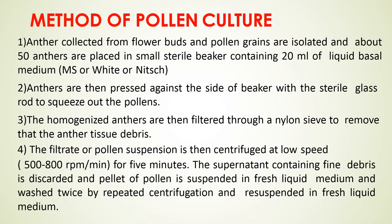Methods of pollen culture: anthers are collected from flower buds and pollen grains are isolated. About 50 anthers are placed in a small sterile beaker containing 20 ml of liquid basal medium, which could be MS, White, or Nisch medium. The anthers are pressed against the side of the beaker with a sterile glass rod to squeeze out the pollen. The homogenized anthers are then filtered through a nylon sleeve to remove the anther tissue debris. The filtered pollen suspension is centrifuged at low speed for 5 minutes.